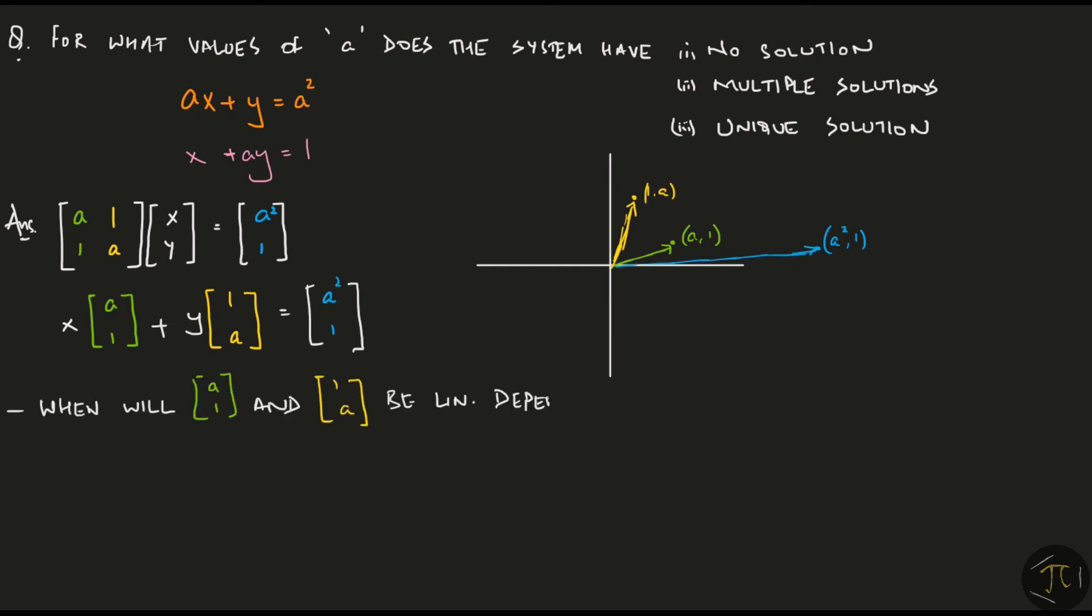When will the two vectors be linearly dependent? If you observe carefully, when a is equal to 1, both the vectors will be exactly same. In fact, if you rewrite the entire equation,